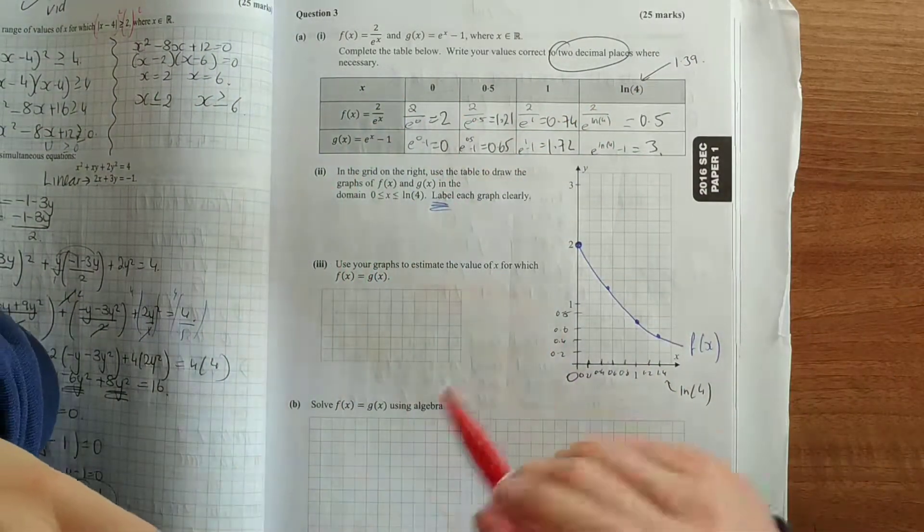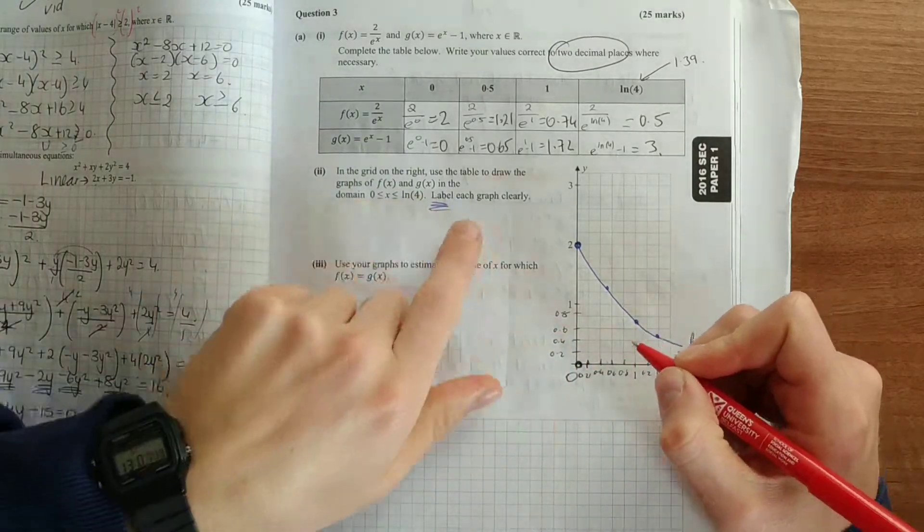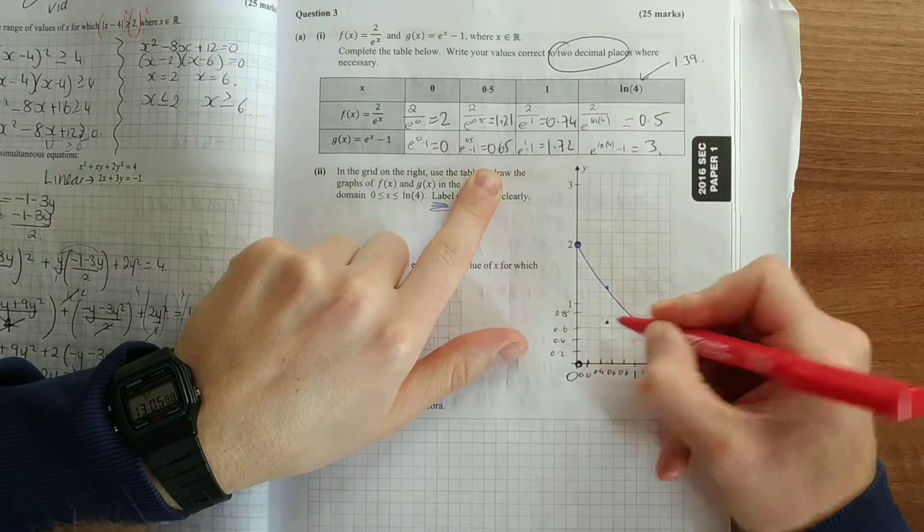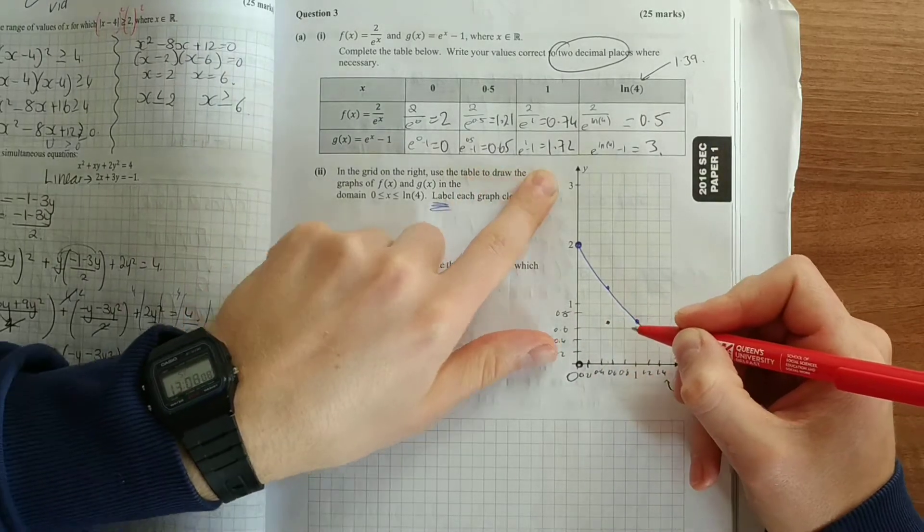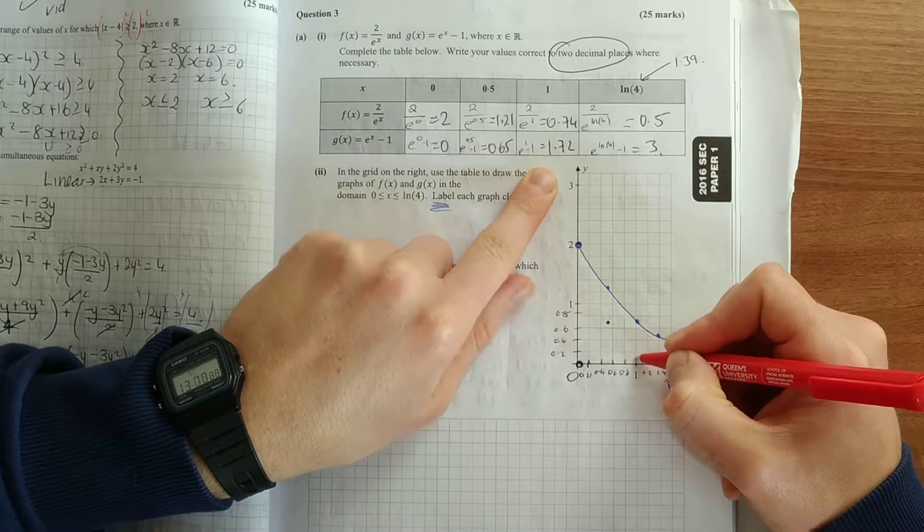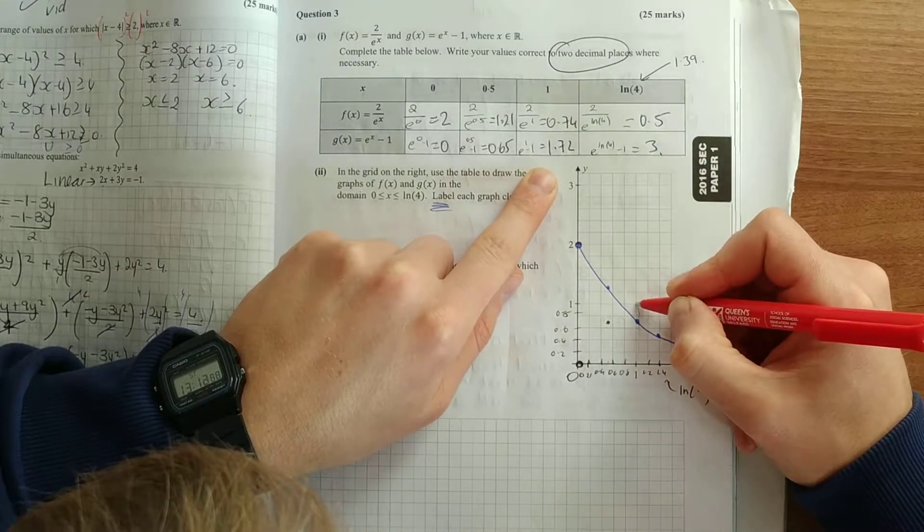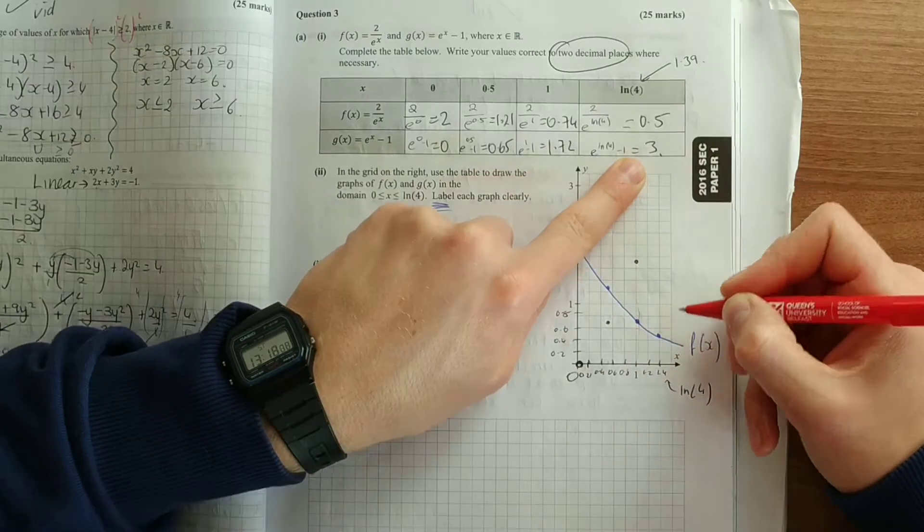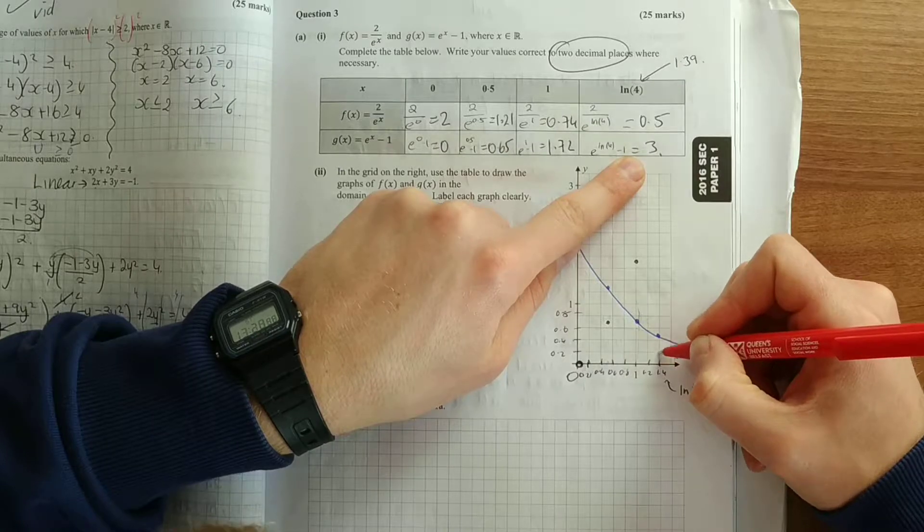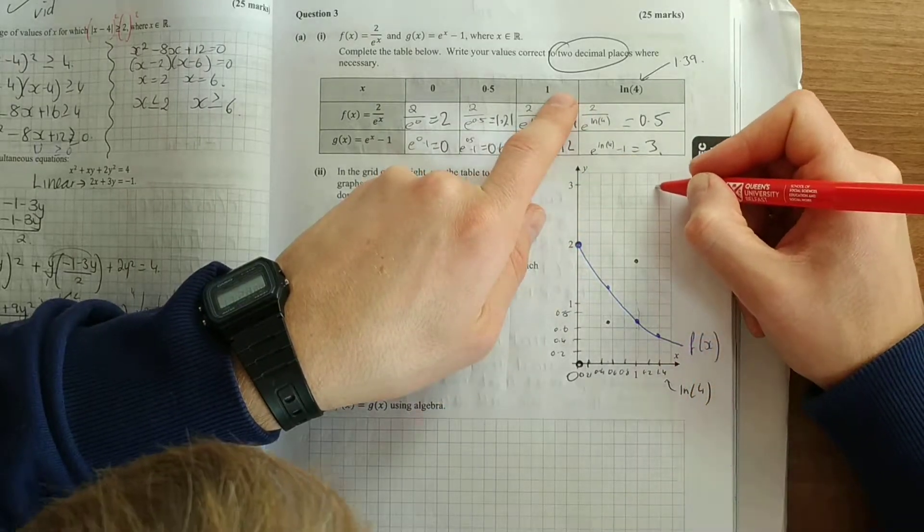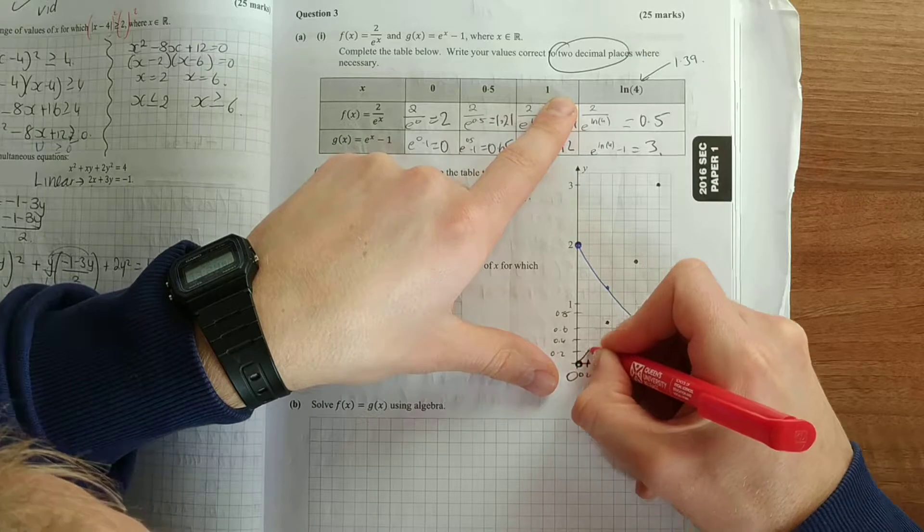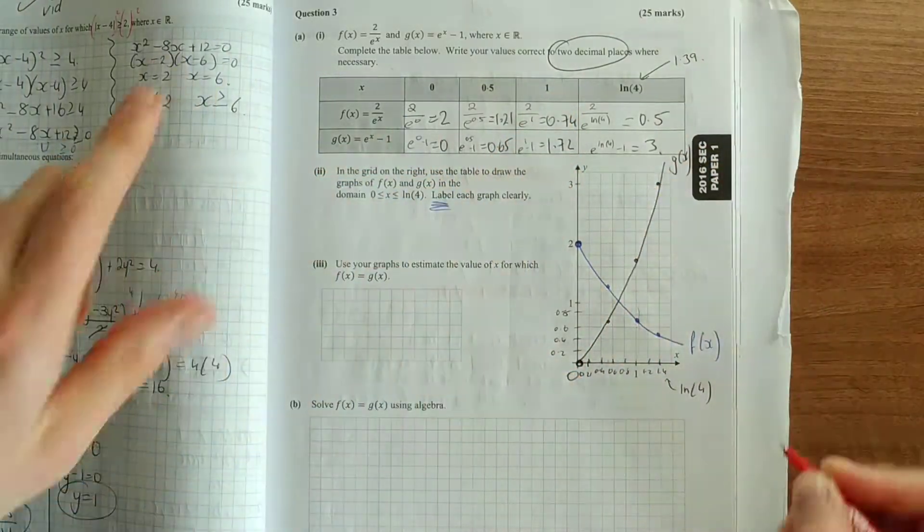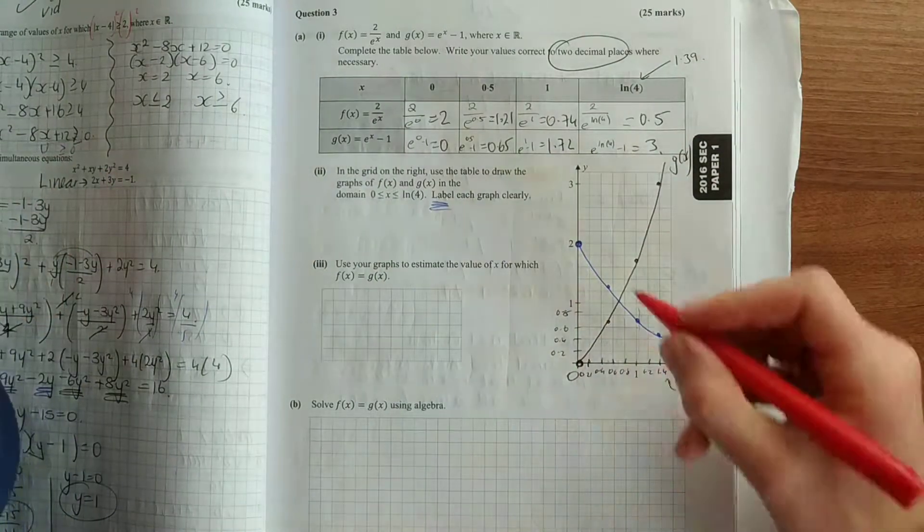Next one, our g of x, I put it in black. At 0, 0. Here we put in 0.5, and you get 0.65. 1 and 1.72, and then ln of 4 is 3. And again, nice smooth curve. So g of x, and we've labeled them.